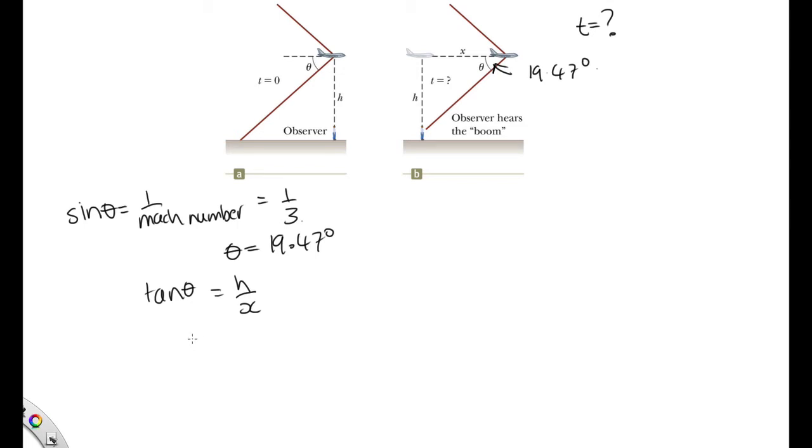So we can use this to work out x. x is equal to 20,000 over tan of 19.47, which is equal to 56,569 meters. So this is the distance that the plane has traveled in that time.